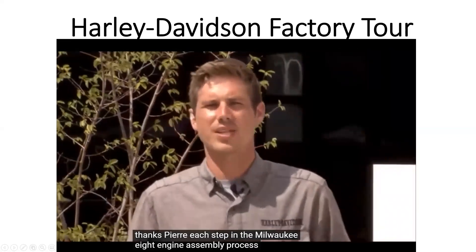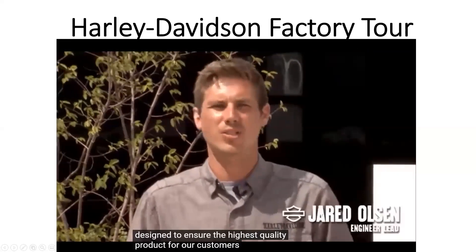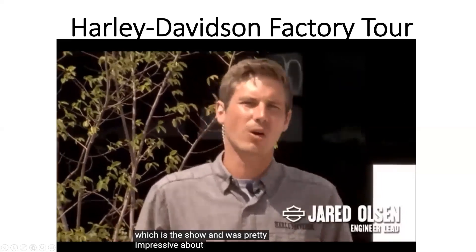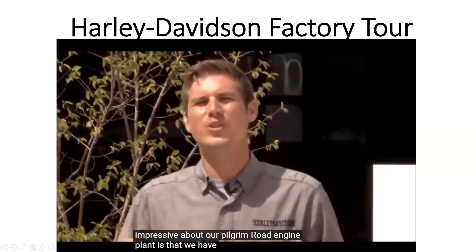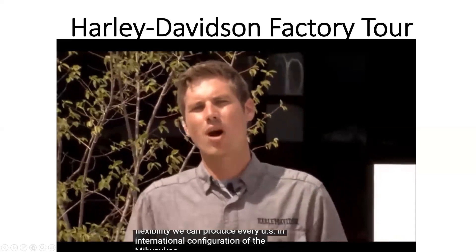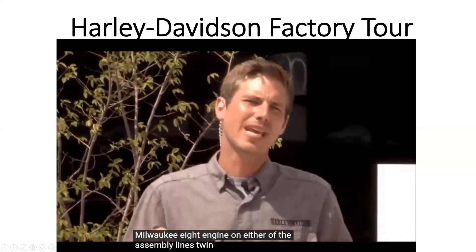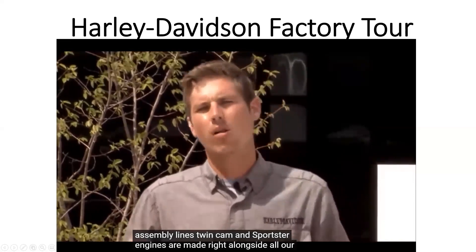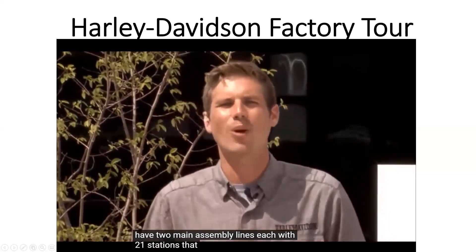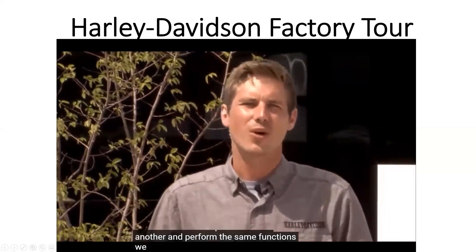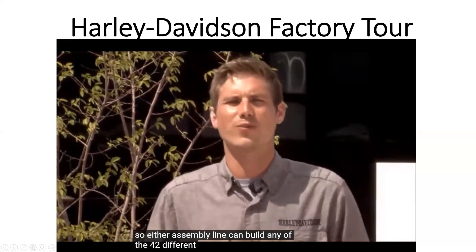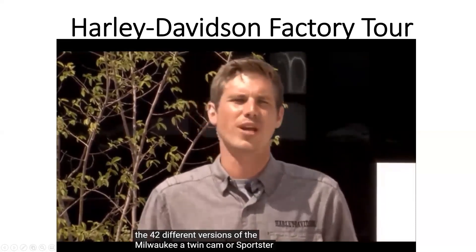Each step in the Milwaukee 8 engine assembly process was designed to ensure the highest quality product for our customers. After parts are machined, they travel to assembly. What's impressive about our Pilgrim Road engine plant is that we have tremendous flexibility — we can produce every US and international configuration of the Milwaukee 8 engine on either of the assembly lines. Twin cam and Sportster engines are made right alongside all our all-new Milwaukee 8 engines. We have two main assembly lines, each with 21 stations that run parallel and perform the same functions, plus six finishing stations. Either assembly line can build any of the 42 different versions of the Milwaukee 8, twin cam, or Sportster engines.